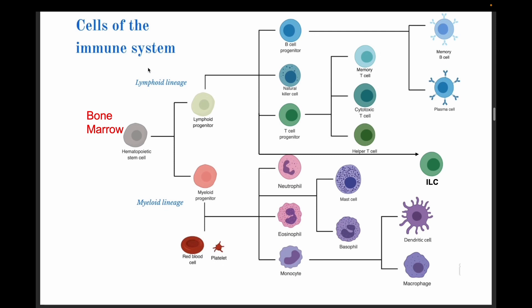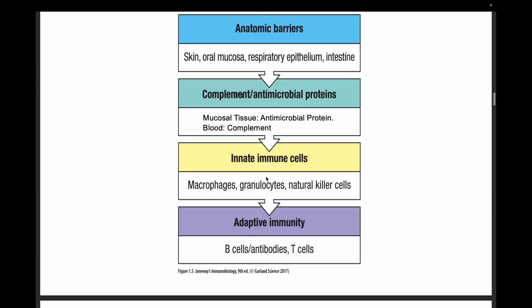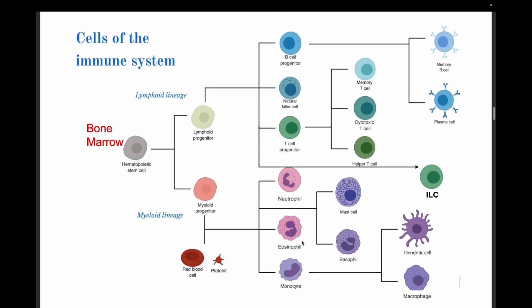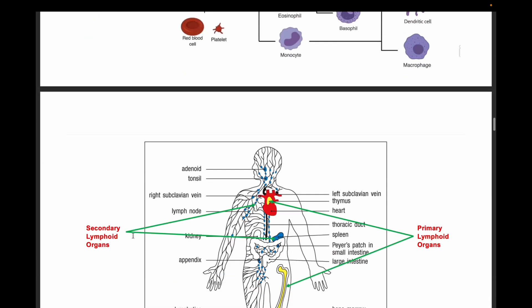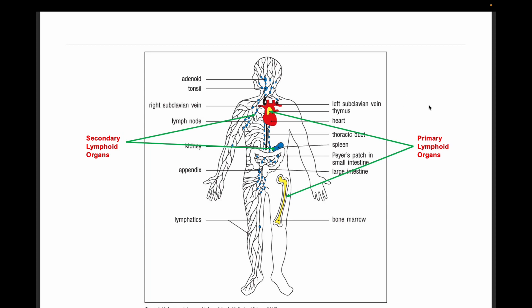All cells of the immune system — including macrophages, monocytes, and granulocytes such as eosinophils and neutrophils — originate from hematopoietic stem cells in the bone marrow. This connects to the lymphatic system. Primary lymphoid organs include the thymus and bone marrow, which are the sources of naive B and T cells. The secondary lymphoid organs include the lymph nodes, tonsils, MALT, Peyer's patches, and others — where naive B and T cells migrate after formation.